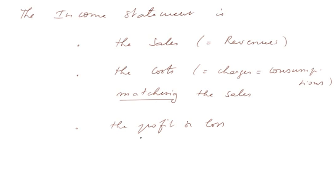The difference is the profit or loss of the accounting cycle. One very important point is that the sales figure does not take into consideration whether we were paid cash, by check, or with an IOU. The same is true of the cost. The profit or loss is not a cash figure — it's a value figure. The cash calculation will be made in another document called the cash flow statement.